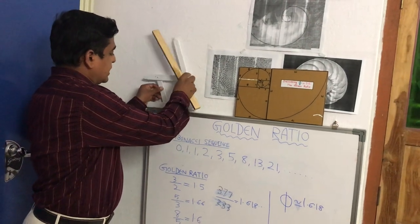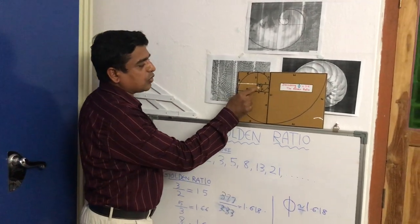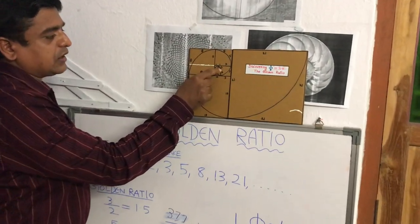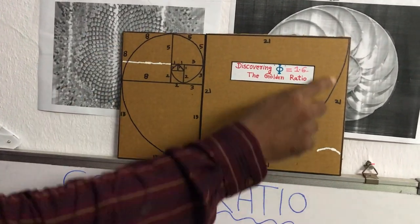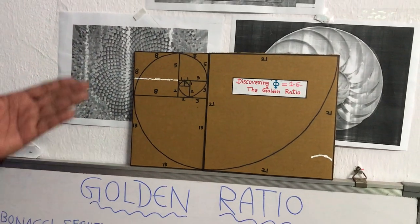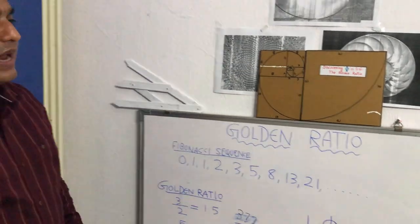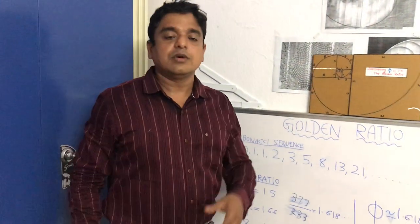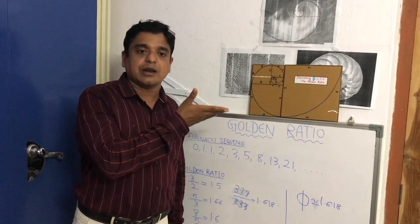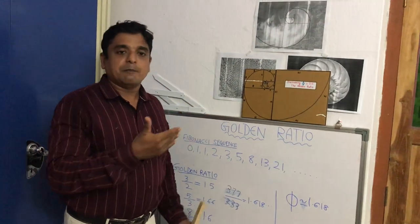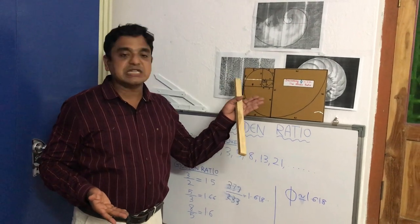Now let us move to this one. I have joined the corners of the squares like this way, and bent like this again, and made a spiral. You can see the spiral. This spiral is nothing but derived from this Fibonacci sequence. You may ask: what is the use of this spiral? God has gifted this spiral before Fibonacci — it is the golden spiral.